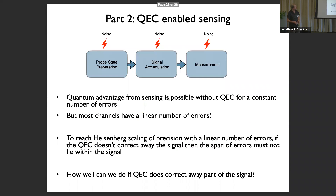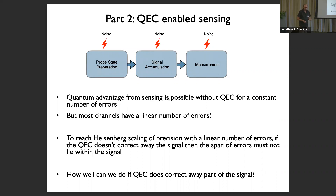There's a pathway to prepare the state using global operations and coupling to a bosonic mode — no individual addressability or special tunable gates needed. But let's see how to meaningfully integrate this into quantum sensing where we also have noise during state preparation, and maybe want to error-correct the state afterwards and handle noise during signal accumulation.